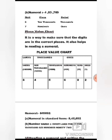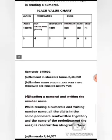Place value chart: it is a way to make sure that the digits are in the correct places and it also helps in reading a numeral. This is the place value chart in which we have periods and places. The number shown here is 8,45,692. The standard form is 8,45,692 and the number name is eight lakh forty-five thousand six hundred ninety-two.